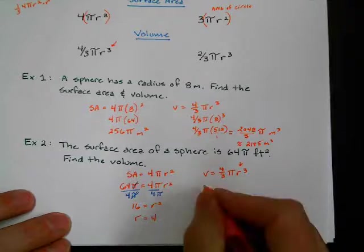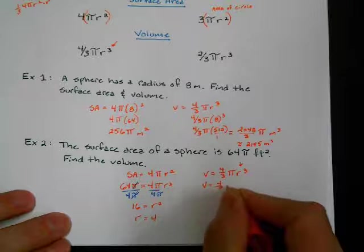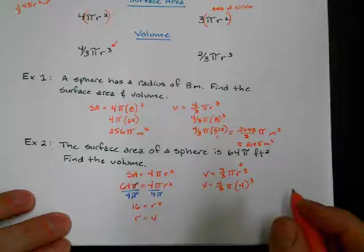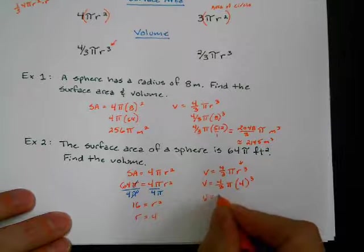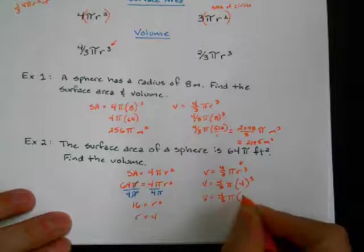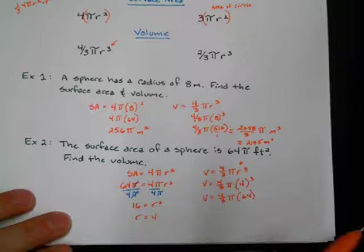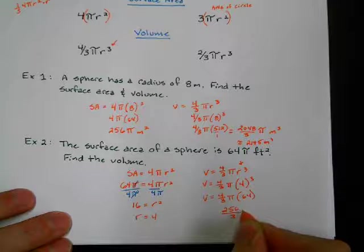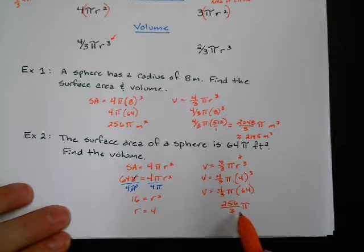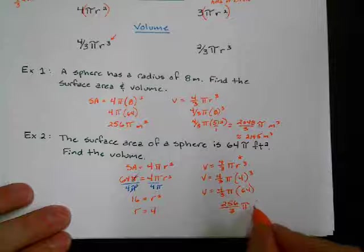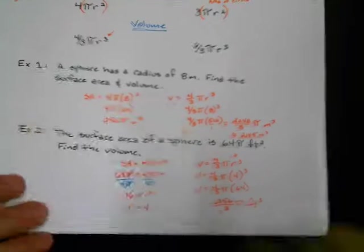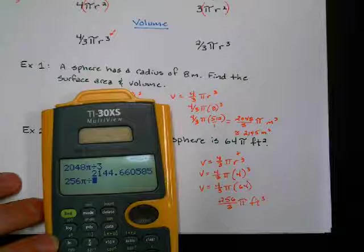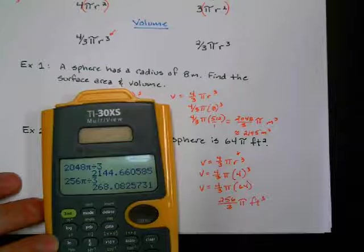So I do 4/3π times 4 to the third power. 4 times 4 times 4 is 64. So 4 times 64 is 256. So the exact answer is 256 over 3π. We do 256π divided by 3, which comes out to approximately 268. So approximately 268.